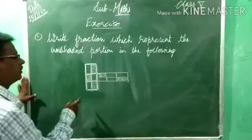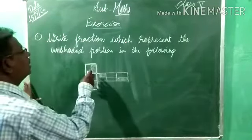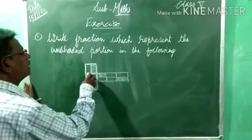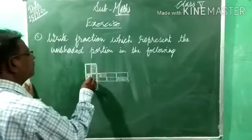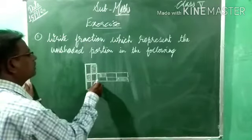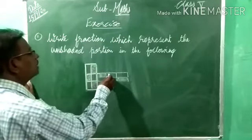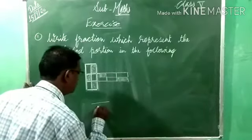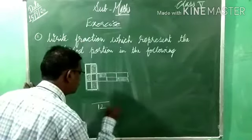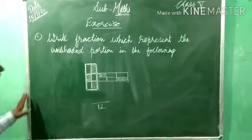Now, total — how many equal parts are here? Look at: 1, 2, 3, 4, 5, 6, 7, 8, 9, 10, 11, 12. That 12 total equal parts we have to write down.